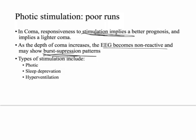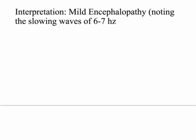The three types of stimulation you should know are photic stimulation, sleep deprivation, and hyperventilation. These are thought to bring on abnormal EEG findings, typically in the awake patient — though you can do hyperventilation via CPAP or BiPAP adjustments. The interpretation for our patient was mild encephalopathy, noting the slowing of 6 to 7 hertz. It's mild because it's background slowing — not intermittent, not generalized.